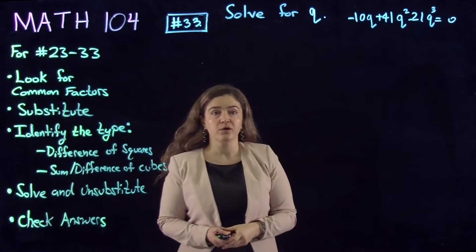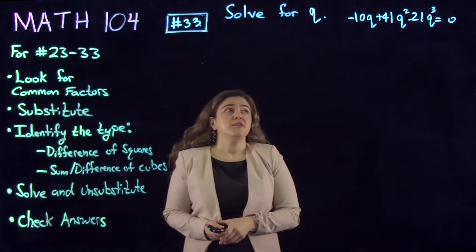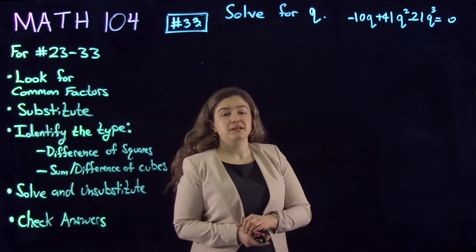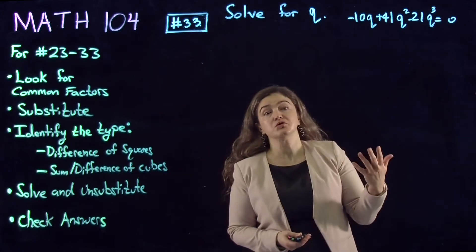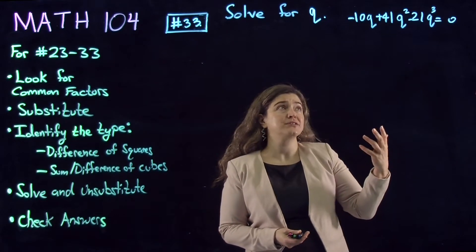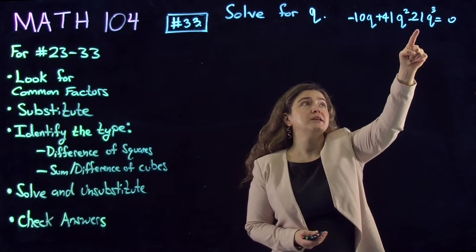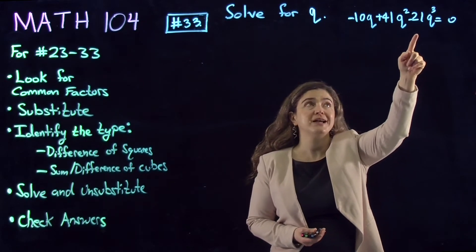My first instinct is, is there any common factor in here, and to factor the common factor. I see that between 10, 41, and 21 there is no common factor, therefore I start with the variable.